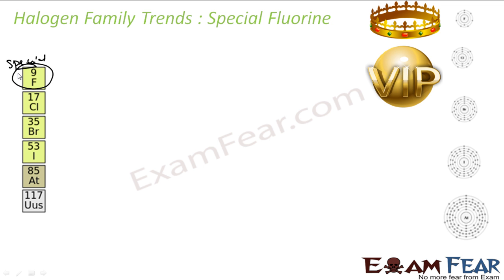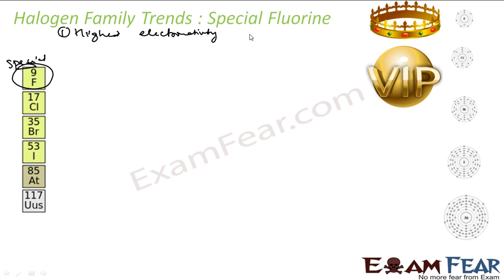The first special thing about Fluorine is electronegativity. It has the highest electronegativity value — in fact, in the whole periodic table it has the highest electronegativity, and the value is 4.